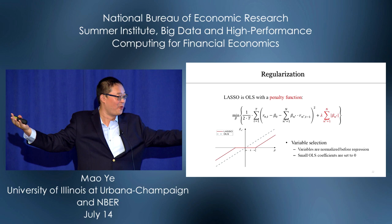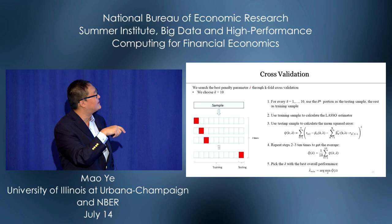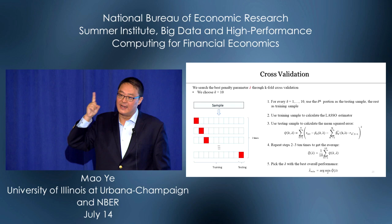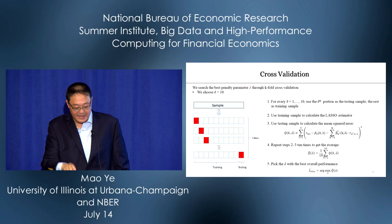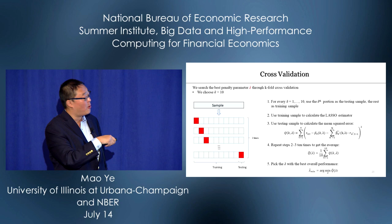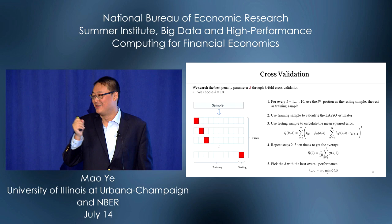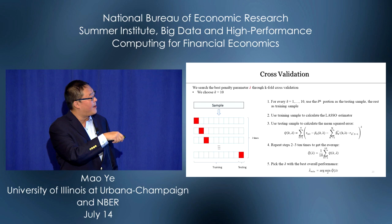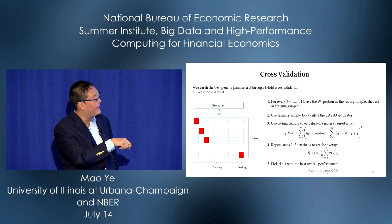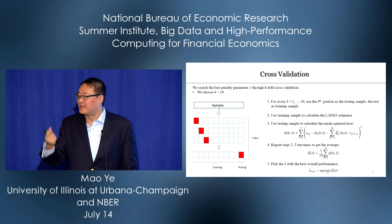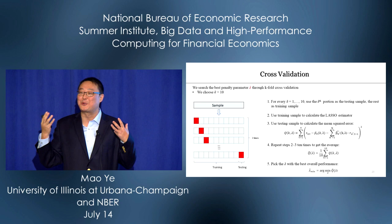Cross-validation: we use standard 10-fold cross-validation. We divide the sample into 10 chunks — 90% as training sample, 10% as testing sample. We use the training sample to calculate the LASSO estimator, then use the testing sample to calculate the mean squared error. We repeat this 10 times and pick the lambda with the best overall out-of-sample performance. Lambda is the penalty parameter: if lambda equals zero, that's OLS; a ridiculously large lambda gives us nothing.